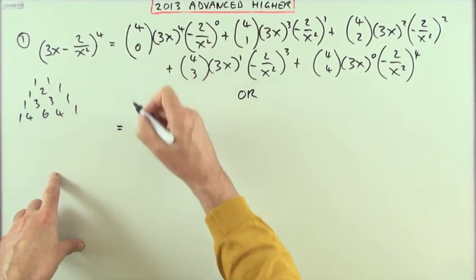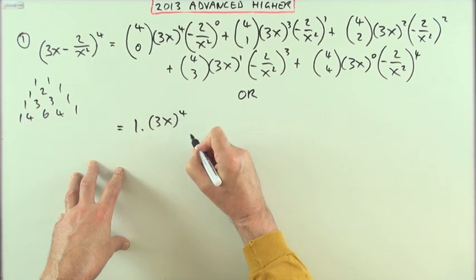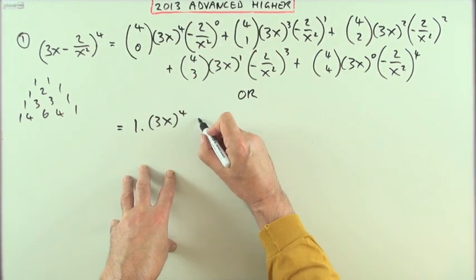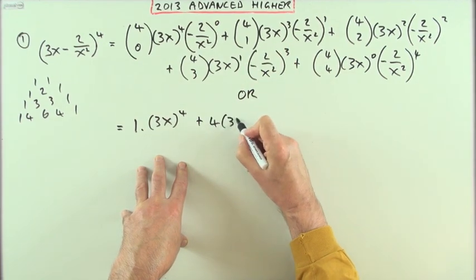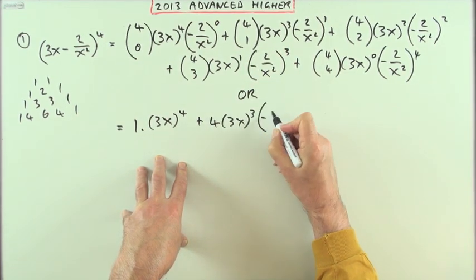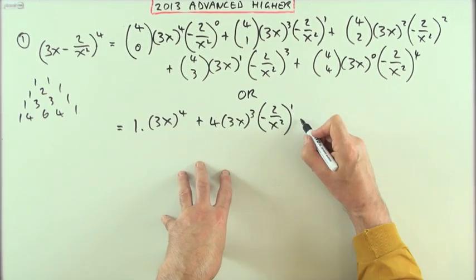So I could just have gone straight in with, for this first term, that had been one times 3x to the power four, but there's not any of those so I'm not even putting them in. Plus, next term would have been four times, and then the 3x would drop and the negative two over x squared would climb, and so on.